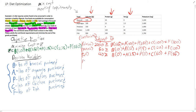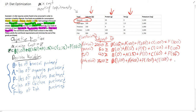Now we do our potassium constraint, which requires at least 3,500 milligrams. We look at broccoli per pound at 1,100 milligrams, plus asparagus per pound at 1,400, plus potatoes at 1,900, plus chicken at 1,000, plus fish at 1,700.